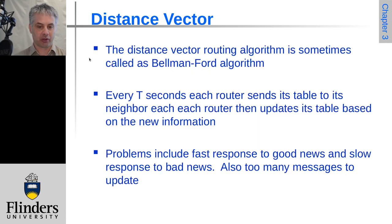This algorithm is sometimes called the Bellman-Ford algorithm. So every some period, every t seconds, each router will send this updated version of its information to each neighbour. Each neighbour will then look at that information to see whether it can improve on any of the routes that it has.